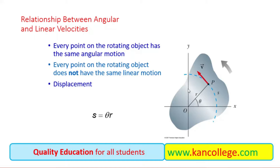If a rigid body is rotating, then every point of that rigid body is rotating in some fixed circle. Every point on the rotating object has the same angular motion, but every point does not have the same linear motion. A point farther from the center moves in a bigger circle and covers more distance, while a point near the center moves in a smaller circle and covers a shorter distance. So their linear motions will be different.